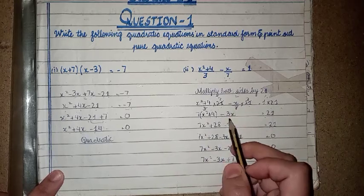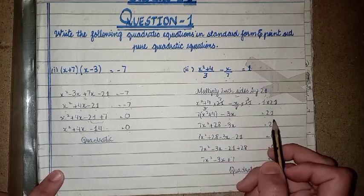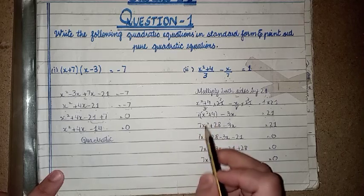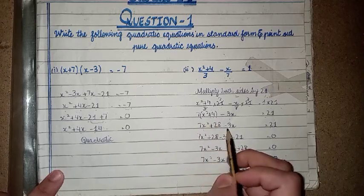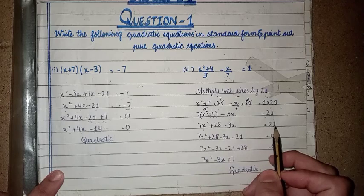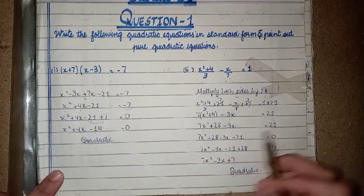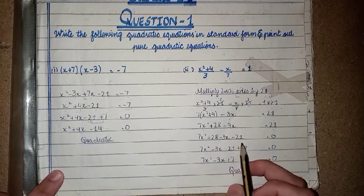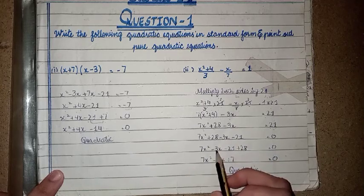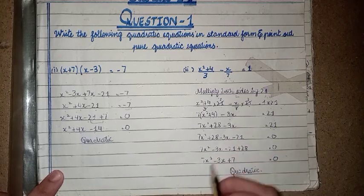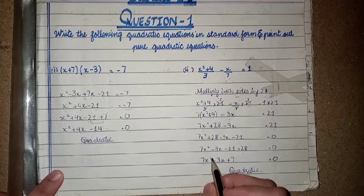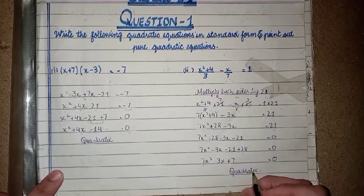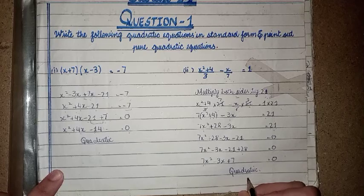After multiplying, we get 3x equals 21. So x² minus 3x equals 21. Moving 21 to the left hand side, then minus 3x minus 21 plus 28, we get the standard form equation: 7x² - 3x + 7 = 0. This is a quadratic equation.